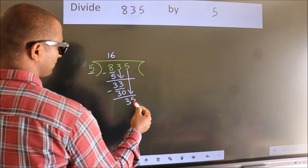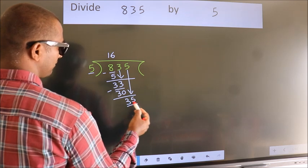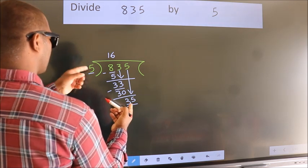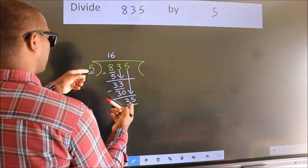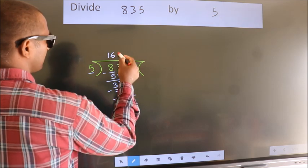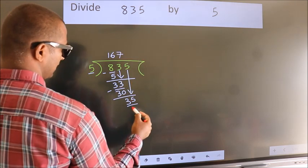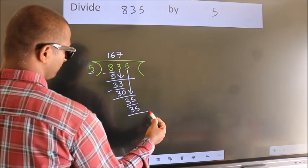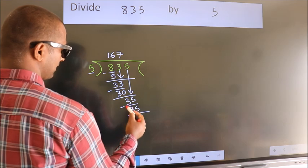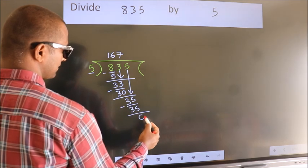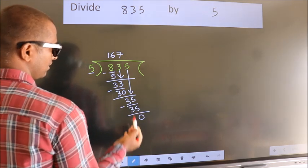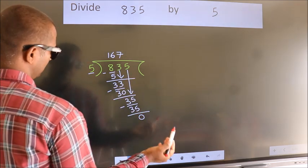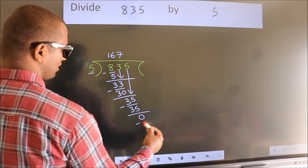So 5 down, giving us 35. When do we get 35 in the 5 table? 5 sevens = 35. Now we subtract. We get 0. No more numbers to bring down, so we stop here.